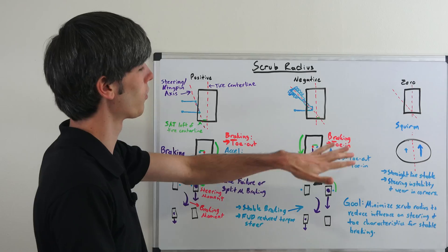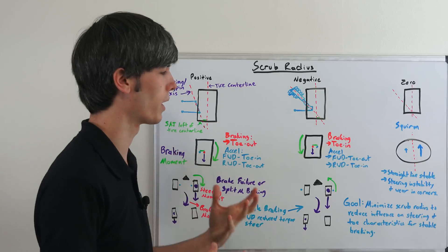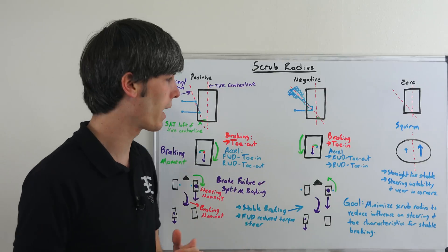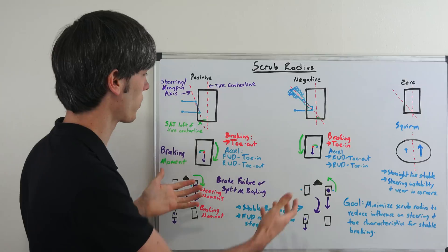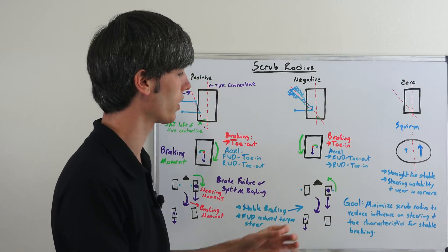Now the goal overall is to get the scrub radius pretty low. You don't want to have it too much. Now a little bit of scrub radius can help with steering feel and feedback, but too much and you get these excessive forces so the goal is to get it basically at zero or close to zero. A small amount could be helpful in emergency situations like this.